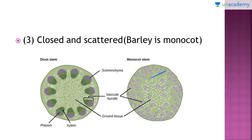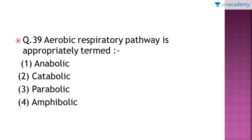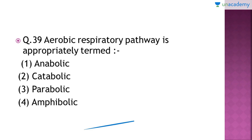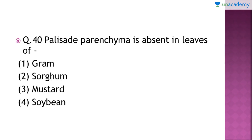This is the cross-section of a dicot stem — it is a very important portion, do not skip it. Question number 39: aerobic respiratory pathway is appropriately termed as which of the following? The right answer is option number four. The aerobic respiratory pathway is catabolic as well as anabolic, and hence it is termed as the amphibolic pathway. Substances are formed — that is the anabolic portion — and they are also broken down — which is the catabolic portion — and hence it is called the amphibolic pathway.